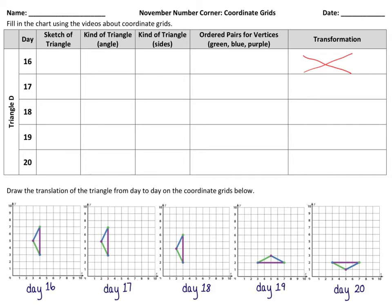For day 17, we need to plot the points from day 16 on here so we can see how it has changed. I'm going to take my green pen — my green point was at 4, 7, so on this one I'm going to plot it at 4, 7. Now for my blue point, blue on day 16 was at 4, 3, so on day 17 I'm going to plot it at 4, 3. And then my purple point on day 16 was at 3, 5, so on day 17 I'm going to plot it at 3, 5. I make my lines to connect all of the points.